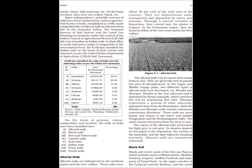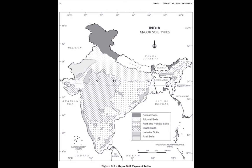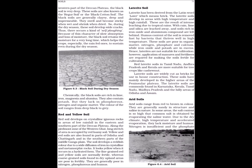Black soil covers most of the Deccan Plateau, which includes parts of Maharashtra, Madhya Pradesh, Gujarat, Andhra Pradesh and some parts of Tamil Nadu. In the upper reaches of the Godavari and the Krishna and the north-western part of the Deccan Plateau, the black soil is very deep. These soils are also known as the Regur soil or the black cotton soil. The black soils are generally clay, deep and impermeable.